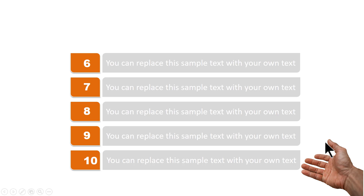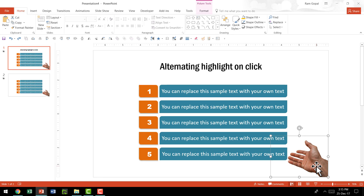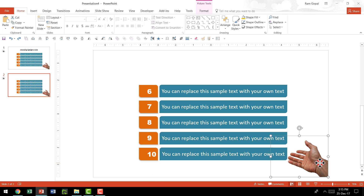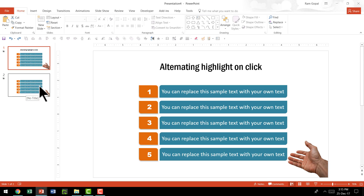Now let me show you how to achieve this beautiful effect. Here is an example presentation with two slides. The first slide has five points and this picture of the hand placed here, and the second slide has another five points with the same picture of the hand placed there. When you apply Push transition, this slide goes up and the next slide gets revealed, but the problem is this hand also gets shown.